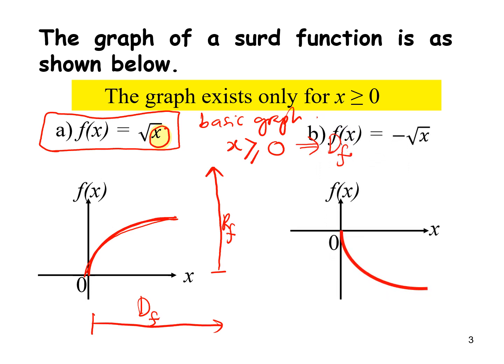For f(x) = -√x, the negative means the graph is a reflection at the x-axis. The domain stays the same, x ≥ 0, but because of the negative, when x is positive, y is always negative. So the range becomes y ≤ 0.